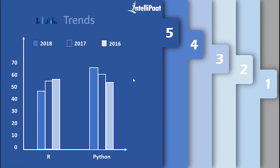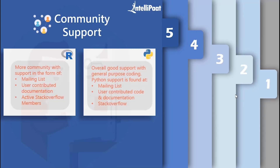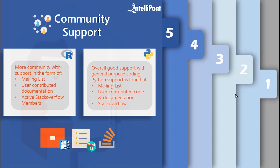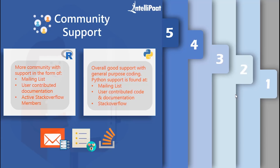Looking at trends, community support, and jobs: before 2016 R was more widely used, but from 2016 onwards Python has been more in trend and more popular. Python's popularity has given it overall good support for general purpose programming. Regarding community support, both Python and R are quite similar — Python support is found at mailing lists, user-contributed documentation, and Stack Overflow, with more adoption from developers and programmers. R support is also found at mailing lists, user-contributed documentation, and active Stack Overflow members, with more adoption from researchers, data scientists, and statisticians.